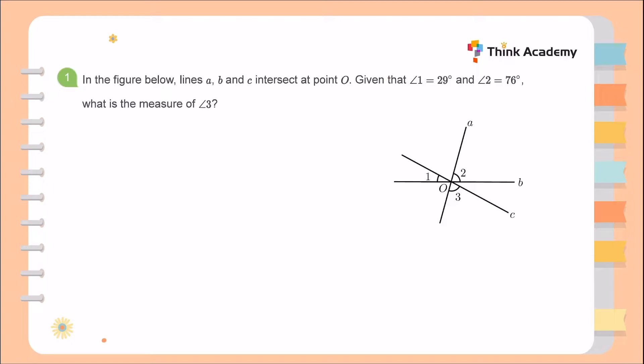By looking at the figure, I can see angle 1, angle 2, and angle 3 — they're all pointing in different directions. I would like angle 3 to be on the same line as angle 1 and angle 2. Therefore, I need to use the concept of vertical angles. Vertical angles are angles created by two intersecting lines; the two opposite angles are called vertical angles, and they are equal.